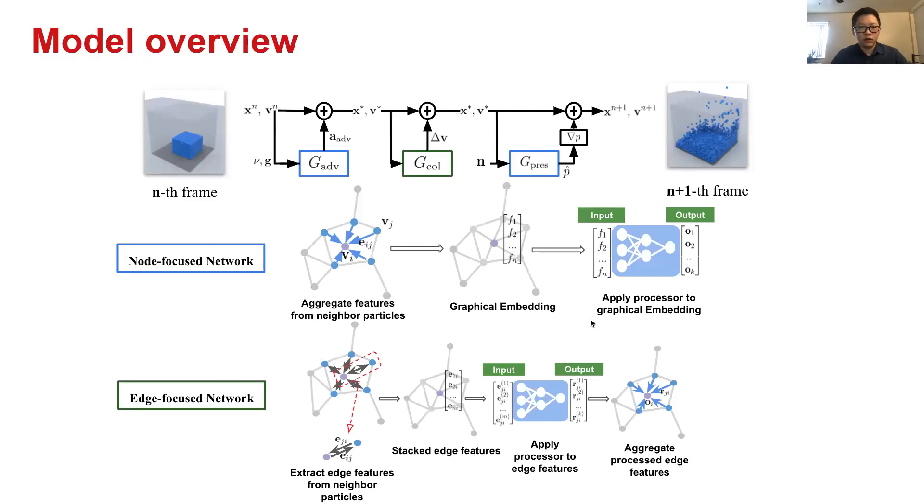Here is the overview of the model we proposed. In general, observing that many force-based SPH methods adopt a similar scheme that is advection first based on gravity and viscosity, then you use the pressure calculated from intermediate states to update the fluid to the state of next frame. We also designed three sub-networks. Two of them emulate this process. The first one is the advection that predicts an acceleration based on gravity and viscosity parameters.